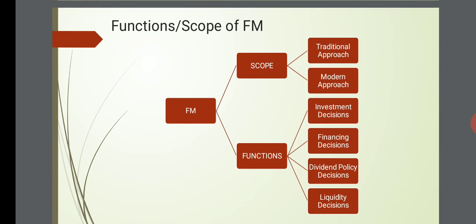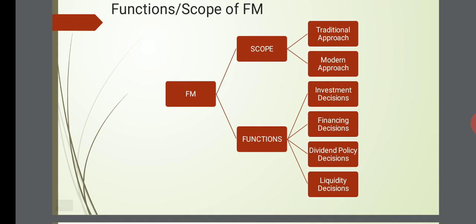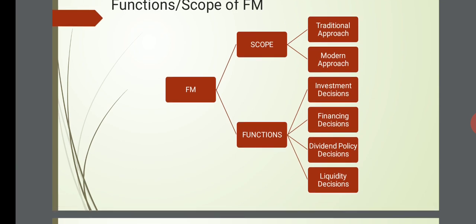Scope of financial management: there are two approaches — traditional and modern. In the traditional approach, the sole scope of financial management is procurement of funds. In the modern approach, it includes both procurement of funds and effective utilization of funds. Financial management has mainly four functions: investment decisions, financing decisions, dividend policy decisions, and liquidity decisions.